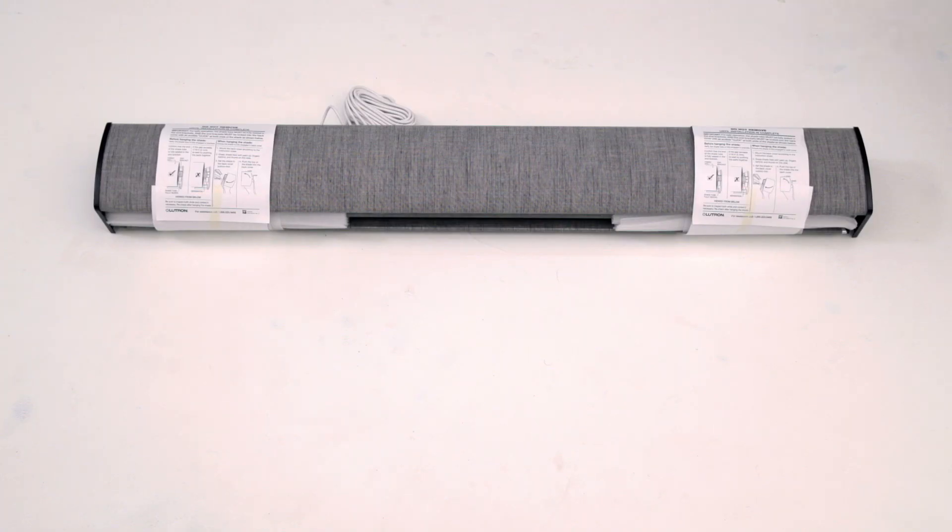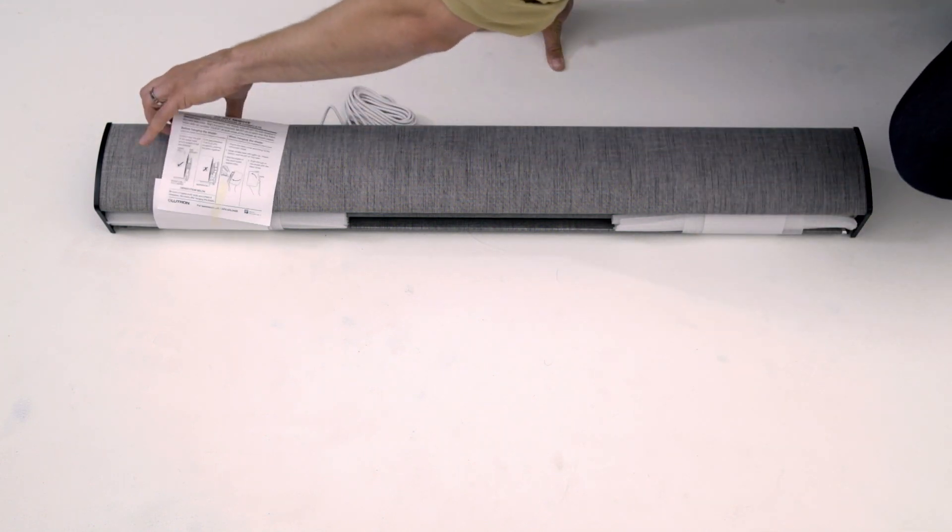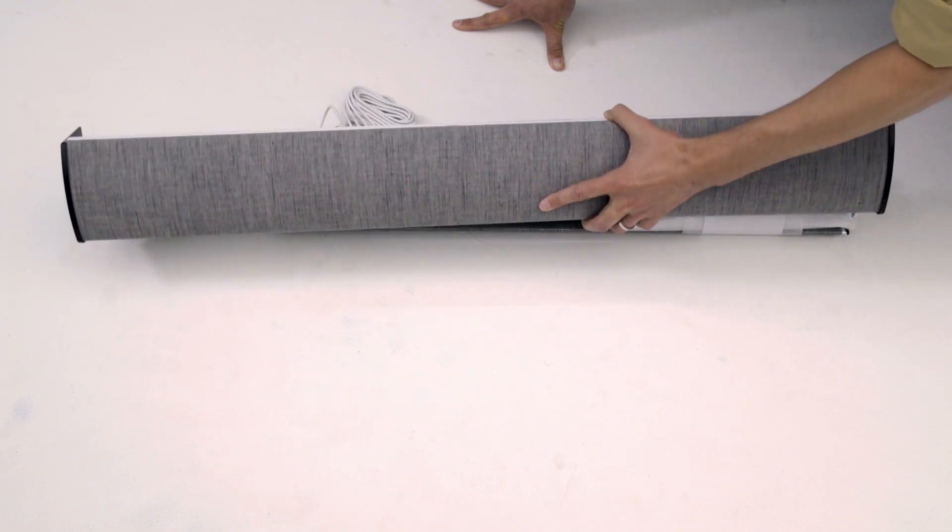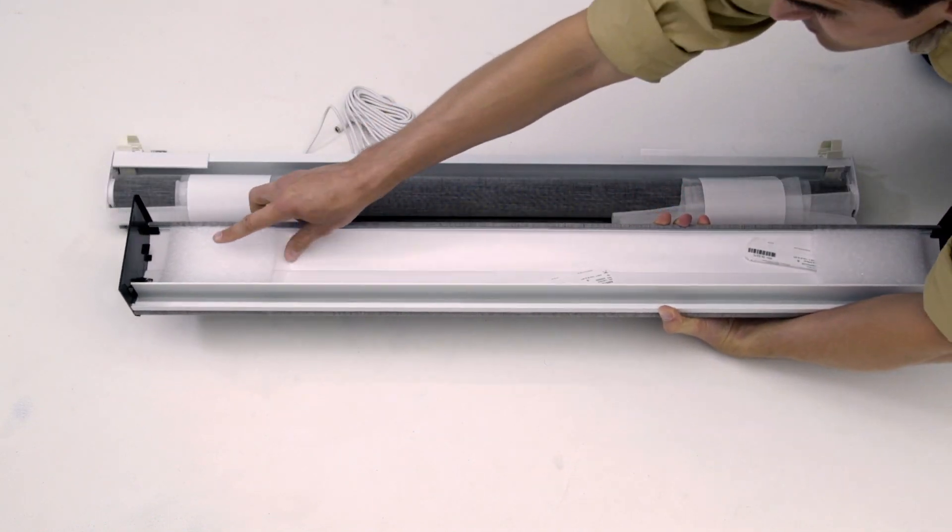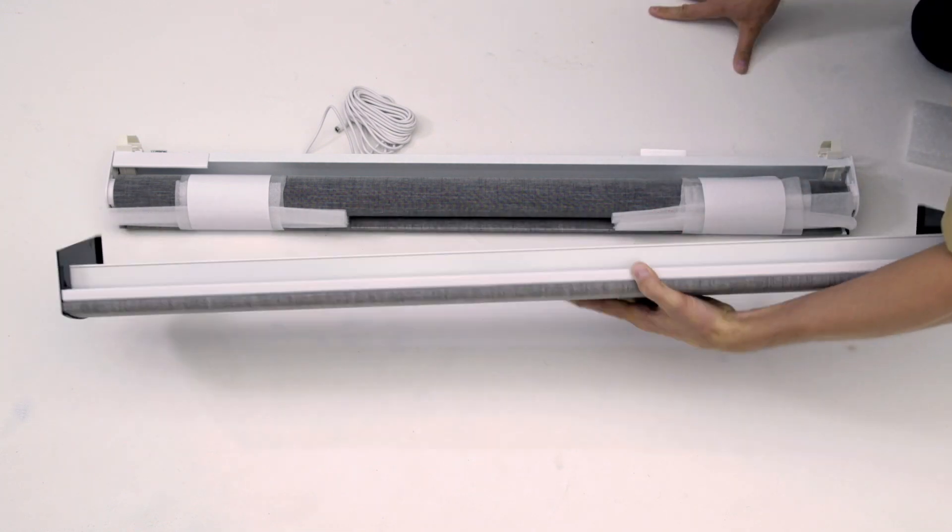Now you'll need to remove the fascia which is attached to the shade for shipping. Lay the shade on a clean, level surface and lift the fascia from the bottom, swinging it up and away from the shade. Remove all of the foam inserts from the inside of the fascia and set it aside.